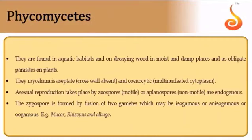Phycomycetes is the first class of fungi. They live on decaying wood in moist and damp places; some are aquatic and obligate parasites. Their mycelium is aseptate (coenocytic) — it does not have septa.